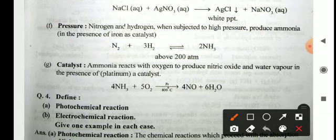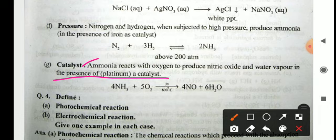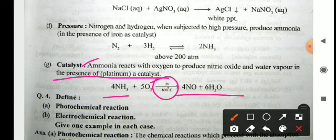Catalyst: ammonia reacts with oxygen to produce nitric oxide and water vapors in the presence of certain metals like platinum and nickel, which are called catalysts. For example: 4NH₃ + 5O₂ (Pt catalyst, 800°C) → 4NO + 6H₂O.